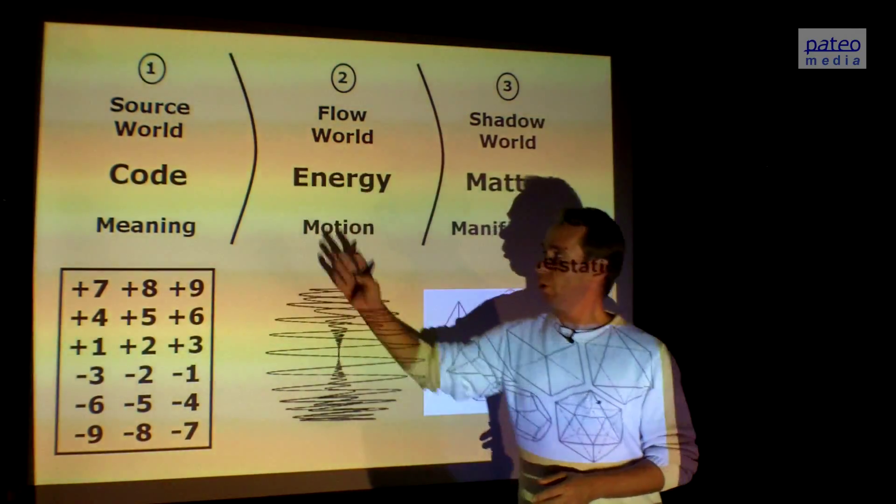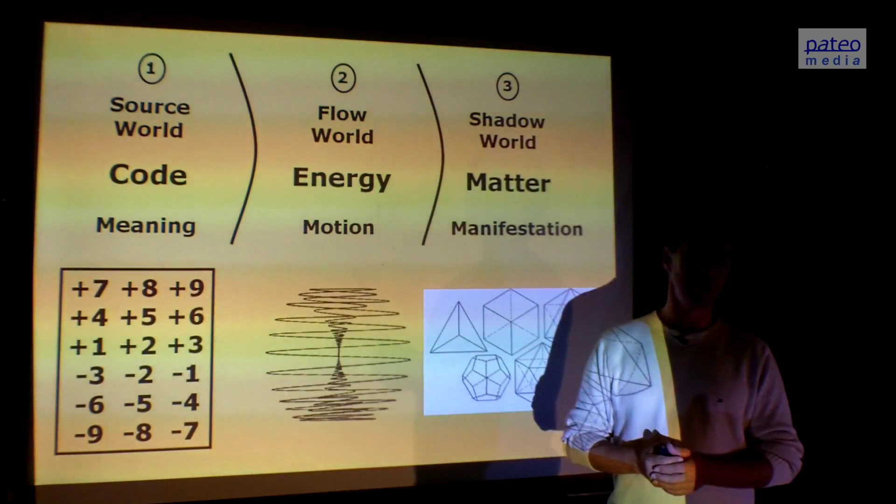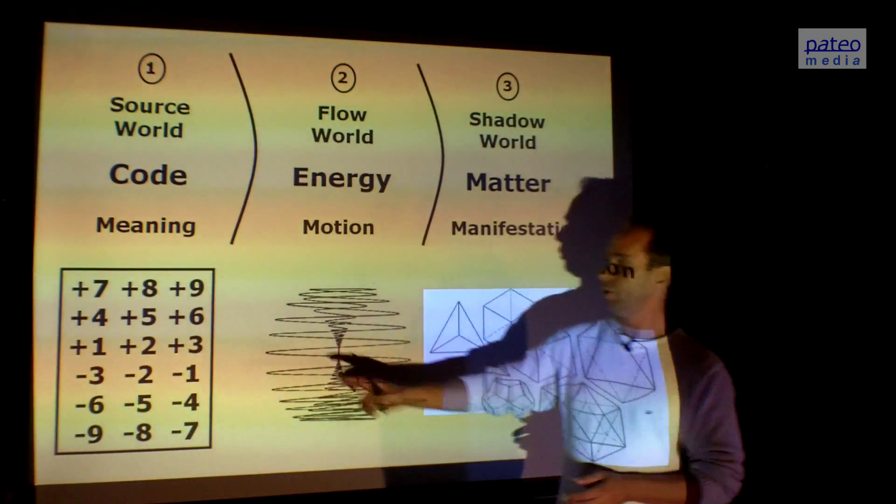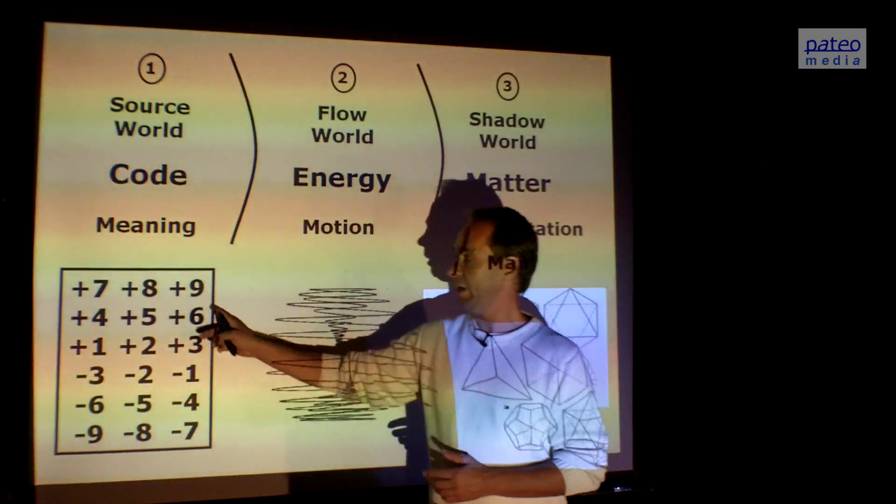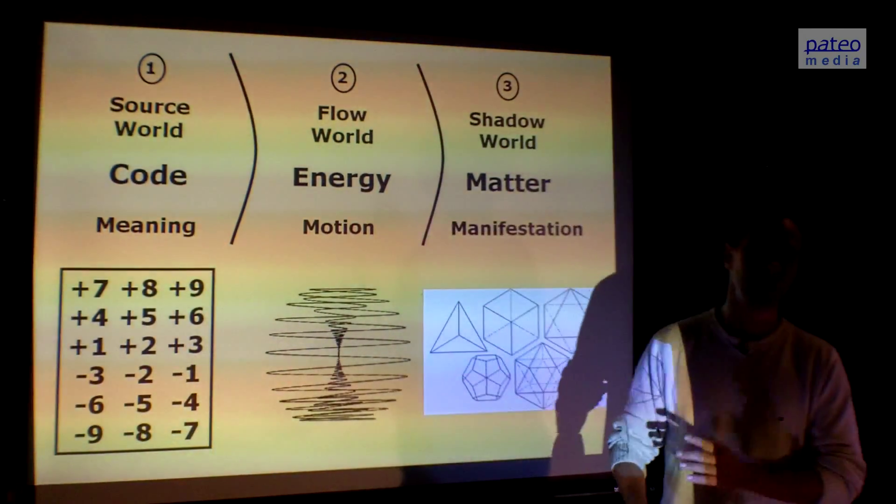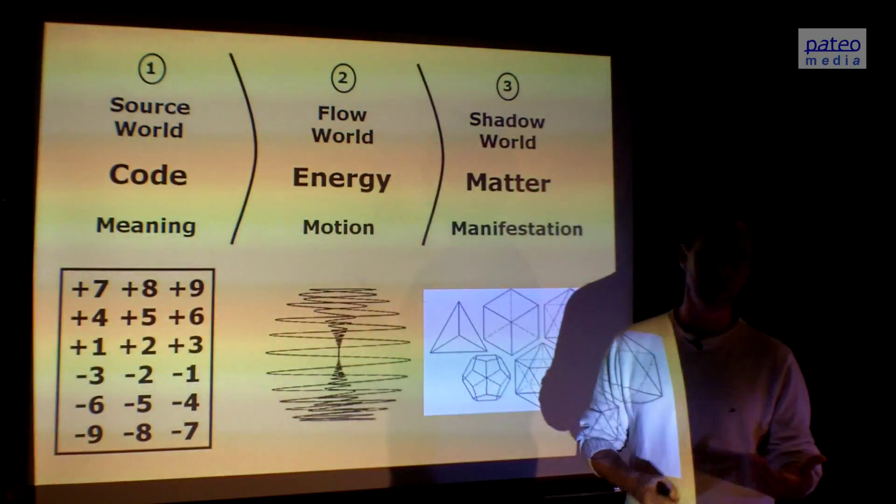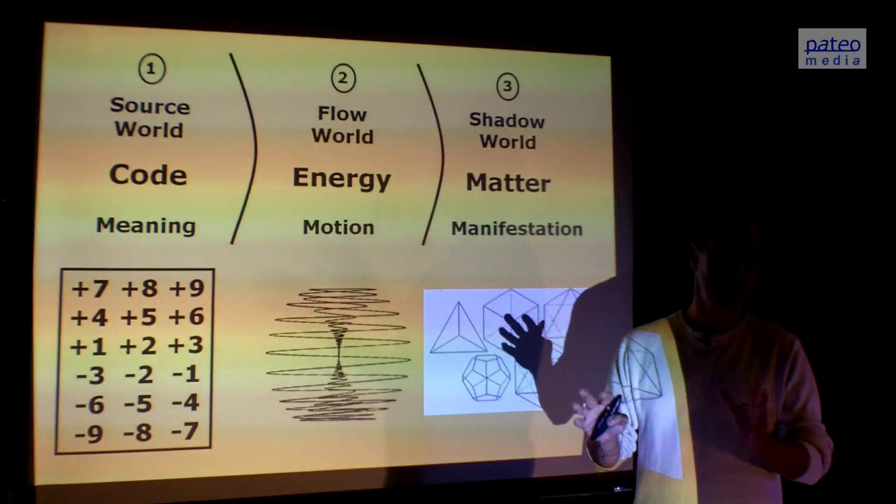The source world is all about the code. In fact, there are only 18 different codes, the ciphers 1 up to 9, having a positive charge or positive value, meaning female or yin, or a negative value, meaning yang. Of course, negative is not bad and positive is not good. It's just about the energies having a different charge.